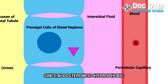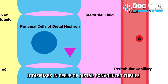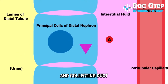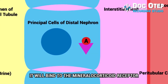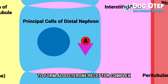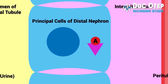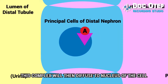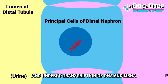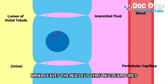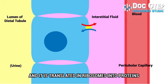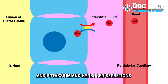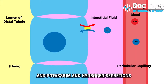Since aldosterone is hydrophobic, it diffuses into cells of the distal convoluted tubule and collecting tubule. In the cytoplasm of the cell, it binds to the mineralocorticoid receptor to form an aldosterone-receptor complex. This complex then diffuses to the nucleus of the cell and undergoes transcription of DNA to mRNA. The mRNA leaves the nucleus through nuclear pores and is translated in ribosomes into proteins that allow more sodium reabsorption and potassium and hydrogen secretion.